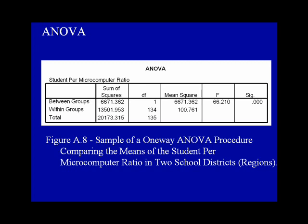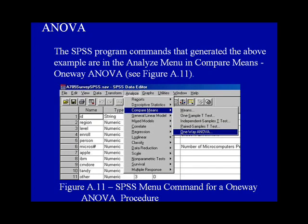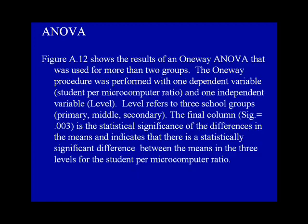The SPSS program commands that generated the above example are in the Analyze menu under Compare Means, One-Way ANOVA. Another example shows the results of a one-way ANOVA used for more than two groups. The one-way procedure was performed with one dependent variable — the student per microcomputer ratio — and one independent variable, level, referring to three school groups: primary, middle, and secondary. The final column, SIG equals 0.003, indicates that there is a statistically significant difference between the means of the three levels for the student per microcomputer ratio.